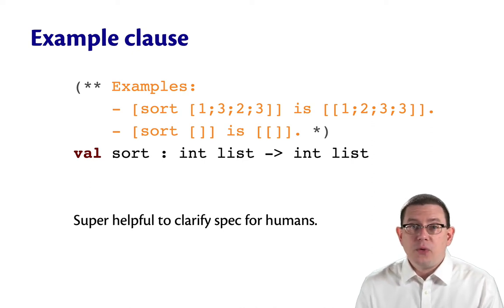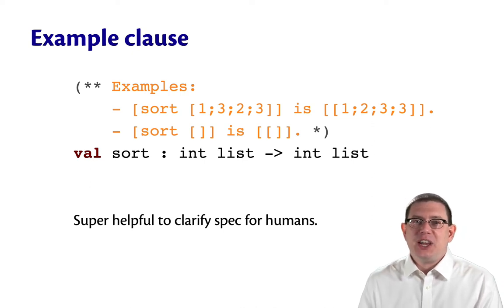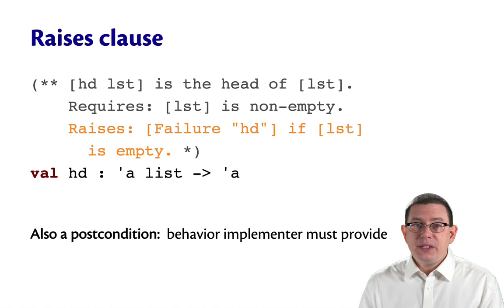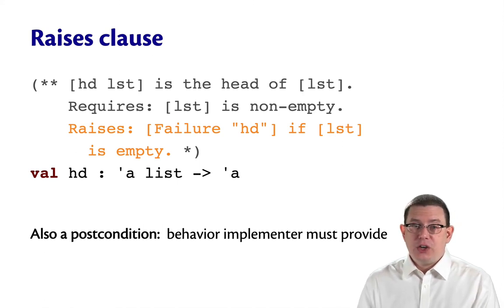This can be super helpful for our human brains to understand specifications. Even if the rest of the specification is mathematically precise and clear, examples are still helpful. The raises clause tells us about exceptions that might be raised by an OCaml function. Going back to our hypothetical specification for head, we could add a raises clause that says what happens if the client violates the precondition.